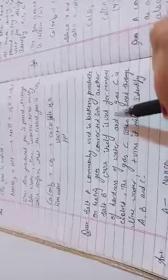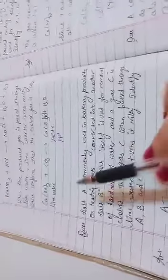Second question: A salt commonly used in bakery products on heating gets converted into another salt B, which itself is used for removal of hardness of water, and a gas C is evolved. The gas C when passed through lime water turns it milky. Identify A, B, C. Easy, you have to identify. No reaction is involved, so simple you have to write A, B, and C, their name and formula.